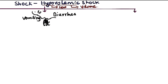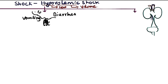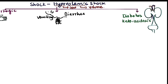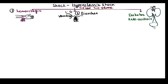In diabetic ketoacidosis patients, the patient loses a lot of urine, oxygen, and electrolytes, which may lead to hypovolemic shock. These are the very common causes of hypovolemic shock: hemorrhage, diarrhea, vomiting, and diabetic ketoacidosis.